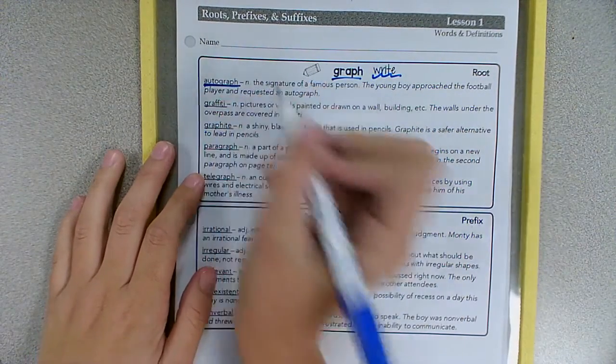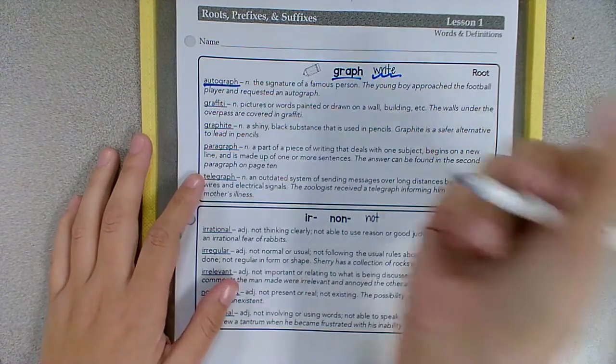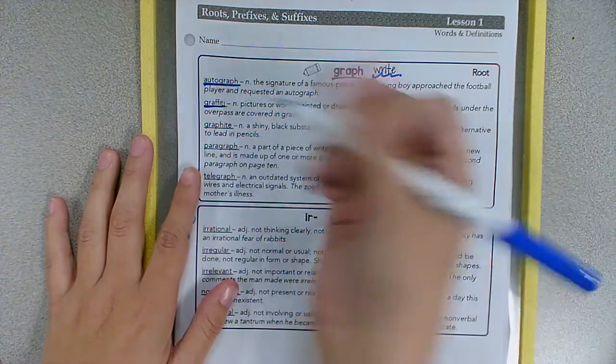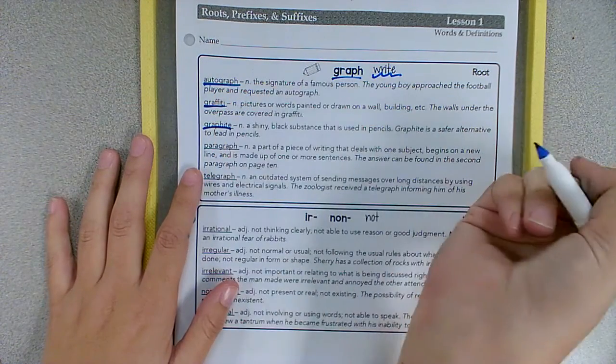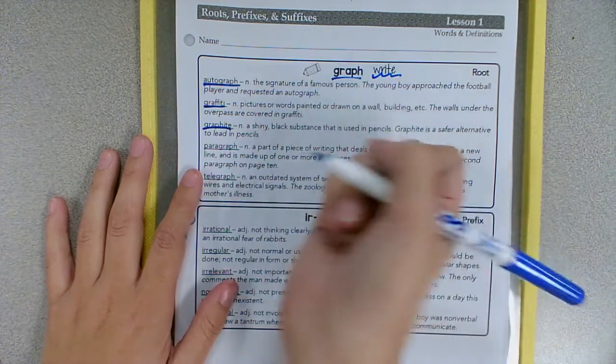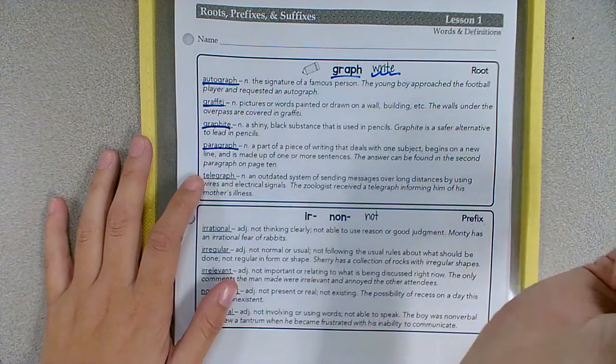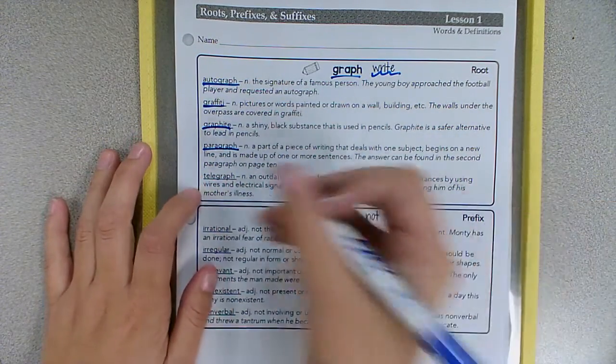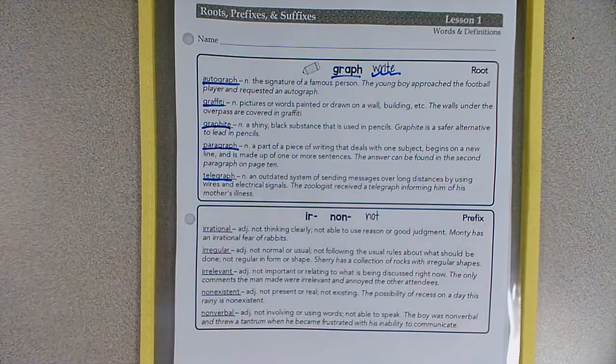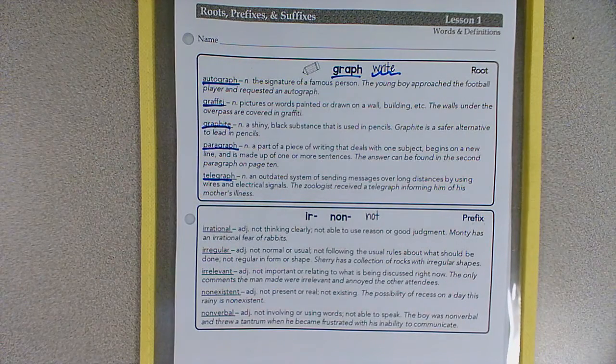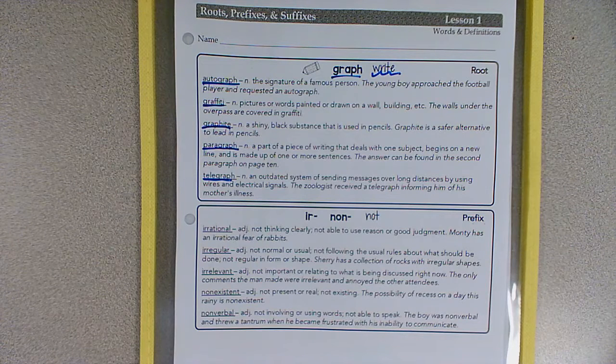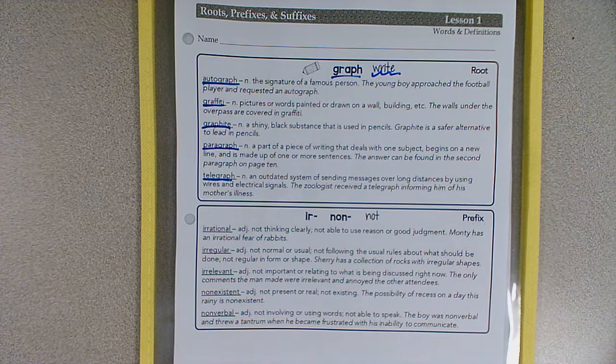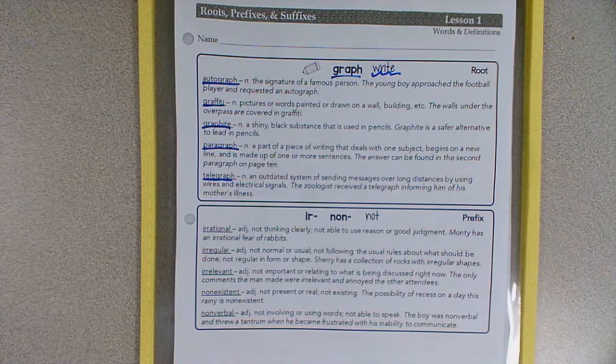And our words are autograph, like the signature of someone who's famous. Graffiti, like pictures or words painted or drawn on a wall or on a building. Graphite, that shiny black stuff that's in your pencils. Paragraph, part of a piece of writing that deals with one subject, starts in a new line, and is made up of one or more sentences. And a telegraph. Telegraphs are an outdated system of how we used to send messages over a long distance using wires and electrical signals. This is kind of what we used before we had the internet for texting or for making phone calls.